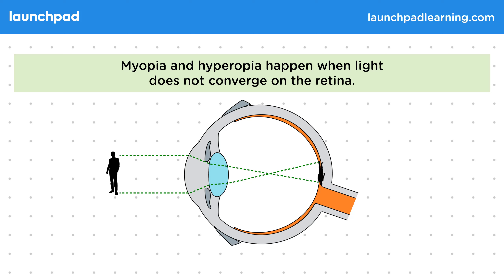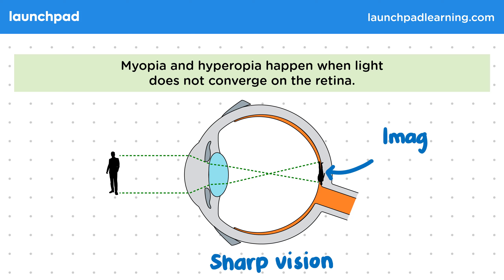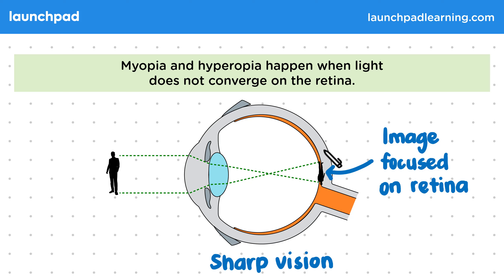This image shows the eye of somebody with sharp vision. You can see that the image is perfectly focused on the retina. When light enters the eye, the image is essentially flipped upside down onto the retina. Our brain then flips the image so that we see it the right way up. In order to achieve sharp vision, the image has to be perfectly focused on the retina.